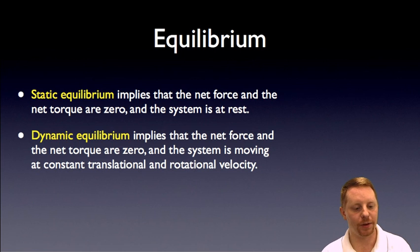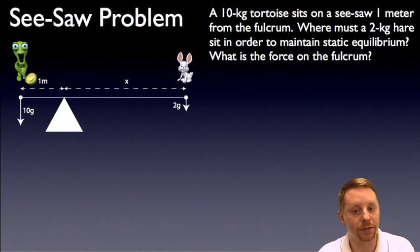Static equilibrium is the case where you have no net force and no net torque, and your object isn't moving. Its velocity is zero. It's at rest. Dynamic equilibrium, on the other hand, your net force and your net torque are still zero, but now your object can be moving with a constant velocity, a constant translational and a constant rotational velocity, but it's not accelerating. So let's take a look at how we might solve an equilibrium problem with everything we've talked about so far.